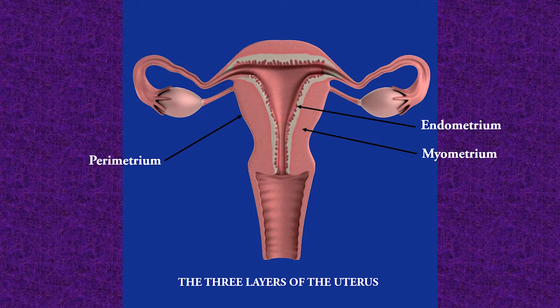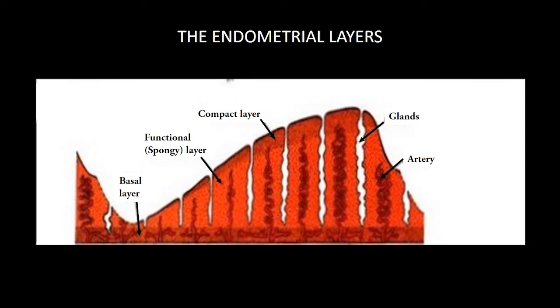The uterus is made up of three layers: the outermost layer known as perimetrium, the middle layer known as the myometrium which is the muscular layer, and the innermost layer known as the endometrium where the major changes take place. The endometrium is also made up of three layers: the basal layer which is attached to the myometrium, the middle layer known as the functional layer which contains many tubular glands, and the third layer known as the compact layer which is the ciliated cuboidal epithelium covering the functional layer.